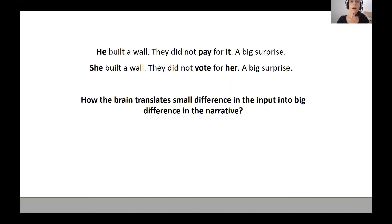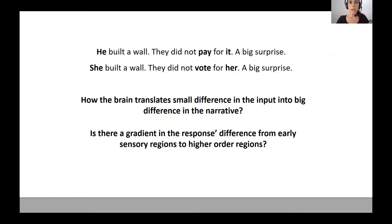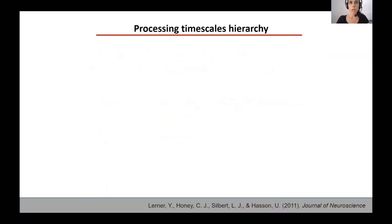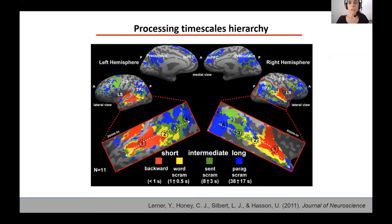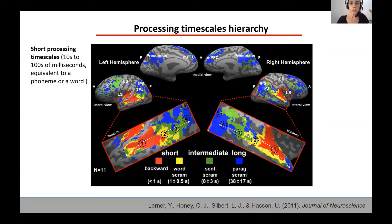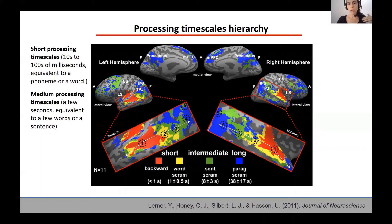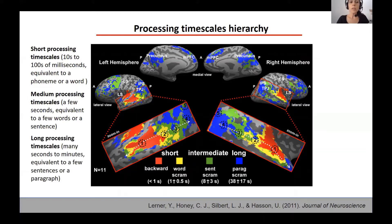In this project, we asked how the brain translates small differences in the input into big differences in the narrative, and specifically whether there's a gradient in the response difference from early sensory regions to higher order regions. To answer this, I'd like to introduce the concept of hierarchy of timescales. Uri Hassan's lab recently suggested that all cortical circuits can accumulate information over time, and that the timescale of accumulation varies from early sensory regions with short timescales of tens to hundreds of milliseconds — equivalent to the articulation of a phoneme or a word — to regions with medium timescales accumulating information over a few seconds, up to high order areas with long timescales of many seconds to minutes, equivalent to a few sentences or a paragraph.